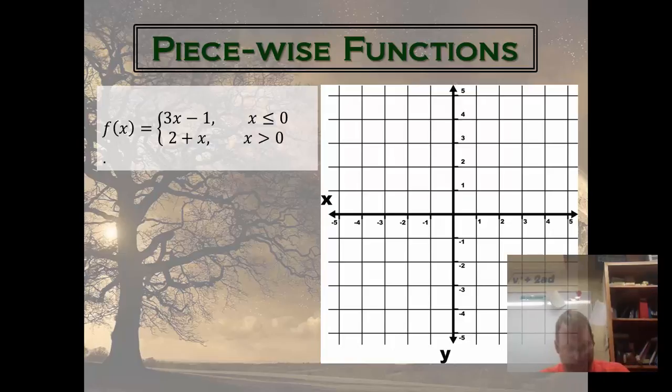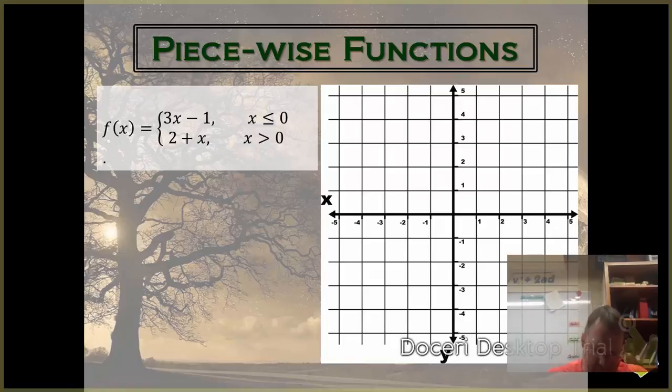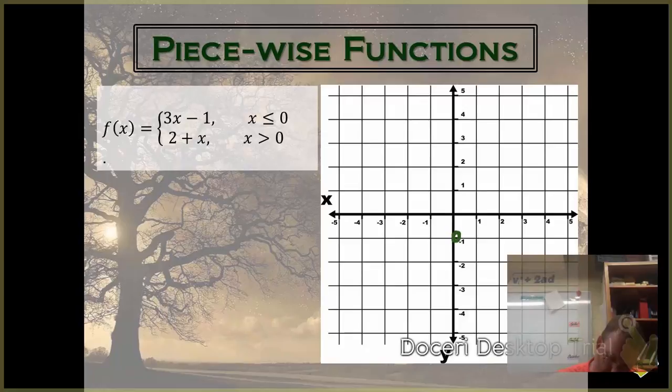Okay, so how do I graph 3x minus 1? Okay, well, my y-intercept is at negative 1, and the slope is 3. So, from there, I go up 1, 2, 3, and over 1. So, my graph would look like this.